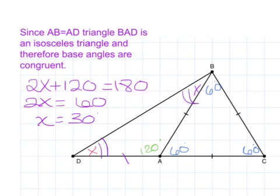And since those base angles are congruent, we can sum all the angles of our triangle ABD to equal 180 degrees. So we have 2X plus 120 equals 180.